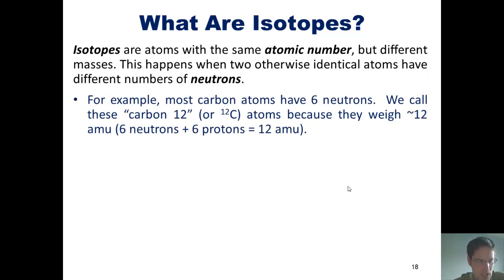For example, most carbon atoms have 6 neutrons. We call these carbon-12 or C-12 atoms, because they weigh about 12 amu. That's because 6 neutrons plus 6 protons equals 12.